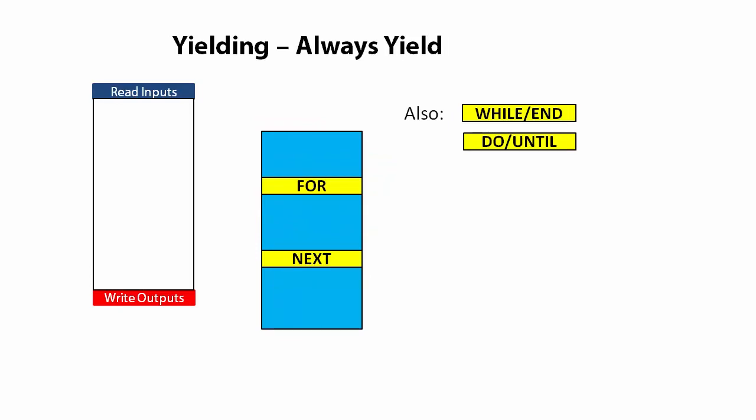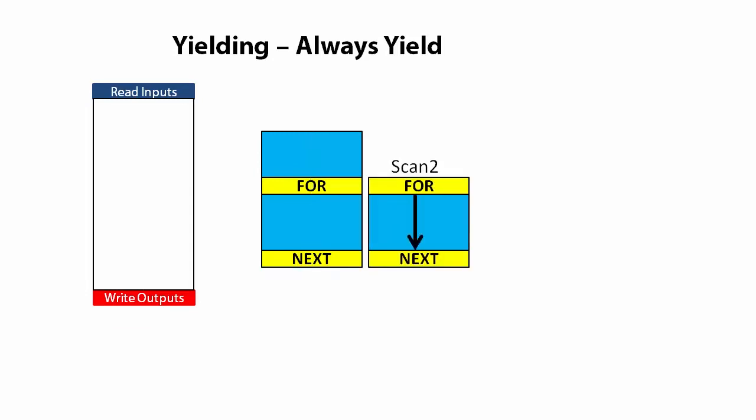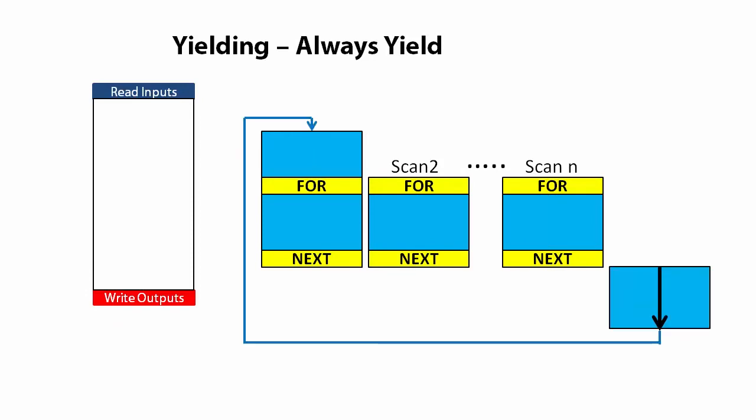Which means, under this always yield option, a program will run one iteration through the loop, then on the next scan run another iteration, next scan another iteration, etc. That's an easy way to tell programs and tasks to run one iteration of a loop per scan.